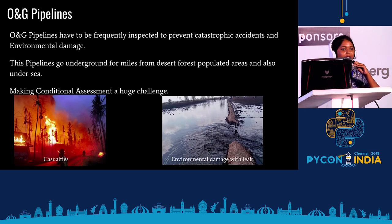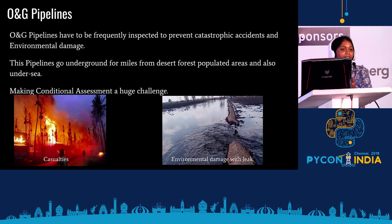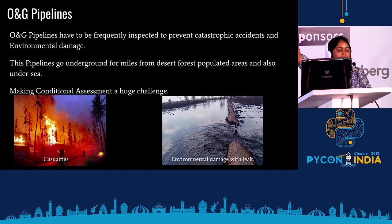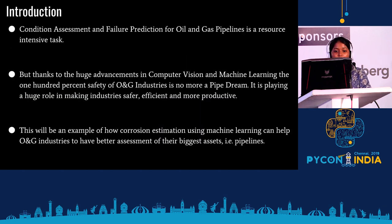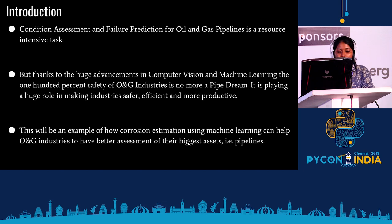We focus on oil and gas (ONG) pipelines. ONG pipelines have to be frequently inspected to avoid catastrophic accidents. Casualties can cause loss of property and life, and industries have to incur crores of money to recover. These pipelines go miles from ports to major cities and through underground areas, forests, populated areas, and undersea. The various topological environments make inspection a huge challenge. Conditional assessment and failure prediction for ONG pipelines is a resource-intensive task, but advancements allow us to make it safer and efficient.